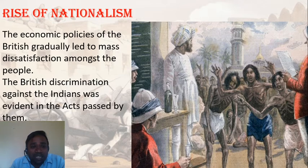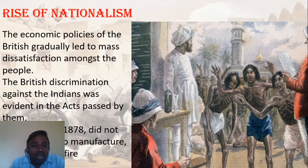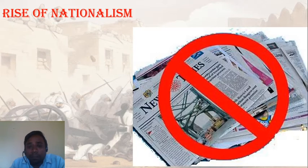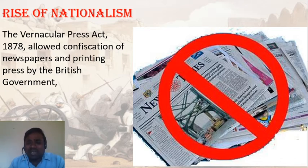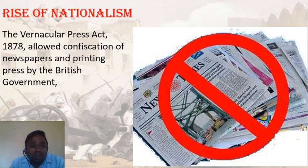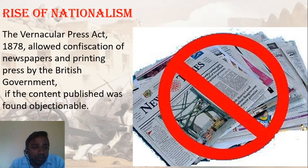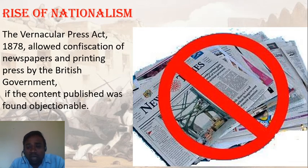There was British discrimination against Indians, which was evident by the acts they passed. The Arms Act did not allow Indians to manufacture, process, or sell firearms. The Vernacular Press Act of 1878 allowed confiscation of newspapers and printing presses by the British government — it was a censorship of sorts. Only after the permission of British officers were newspapers allowed to print news, and if the content was found objectionable it was not allowed to be printed.